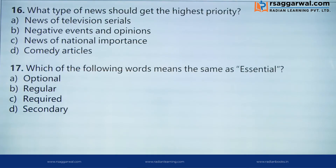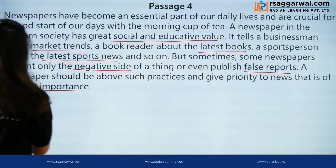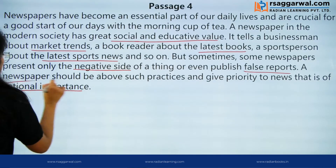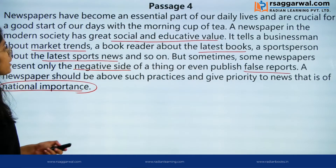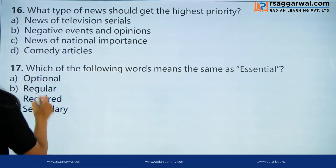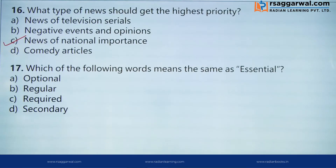Question 1: What type of news should get the highest priority? Last line mein we read that news of national importance should be given priority. So the correct option is C.